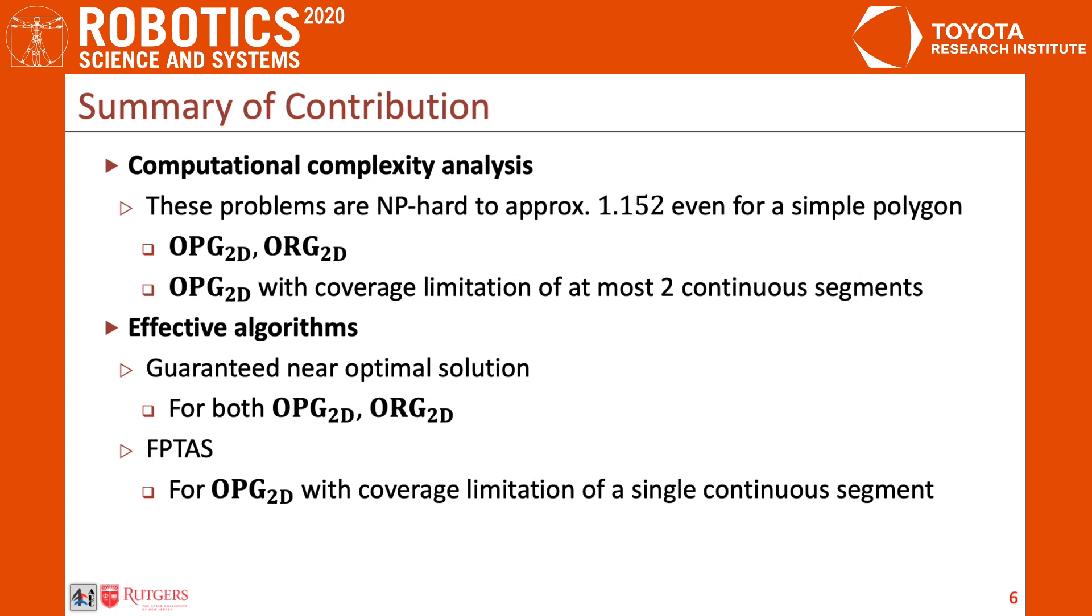To summarize, we showed that OPG-2D and ORG-2D, as well as an OPG-2D variant with coverage limitation, are NP-hard to approximate, even for a simple polygon. At the same time, we provided two effective methods and verified their effectiveness. Thank you for your attention.